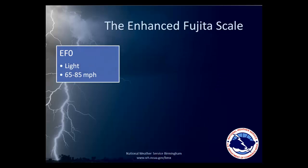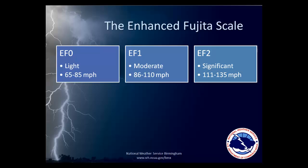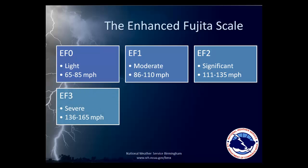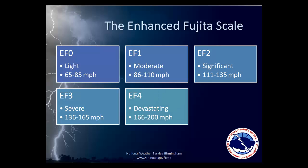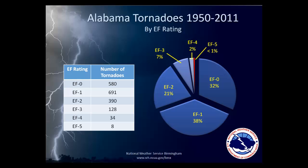The most violent tornadoes, and the ones that stay on the ground the longest, are those associated with supercell thunderstorms. Tornadoes are rated on the Enhanced Fujita Rating Scale, which assigns a number from 0 to 5 based on the amount of damage a tornado produces. An EF-0 tornado produces light damage, while an EF-5 tornado produces incredible widespread damage. Fortunately, most tornadoes tend to be the weaker ones—EF-0 and EF-1—while violent EF-4 and EF-5 tornadoes are rather rare. Since modern tornado records started being kept back in the 1950s, 70% of the tornadoes in Alabama have been either EF-0 or EF-1, while EF-4 and EF-5 tornadoes accounted for less than 3% of all Alabama tornadoes.